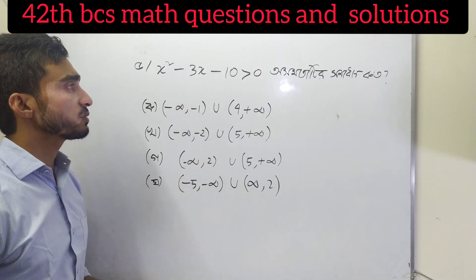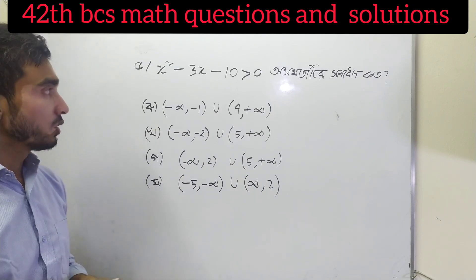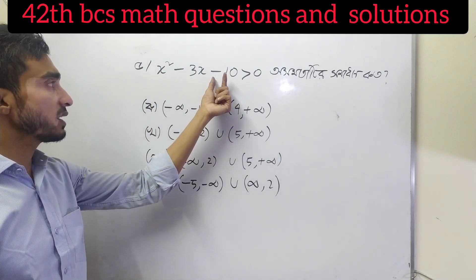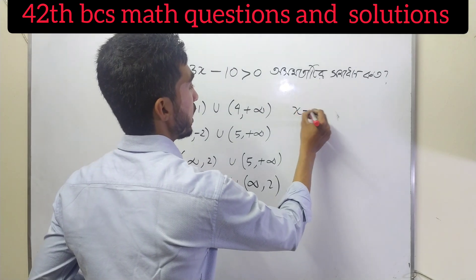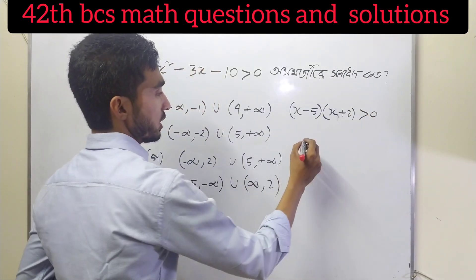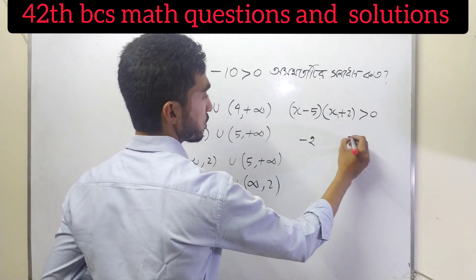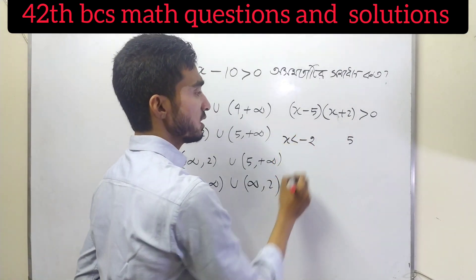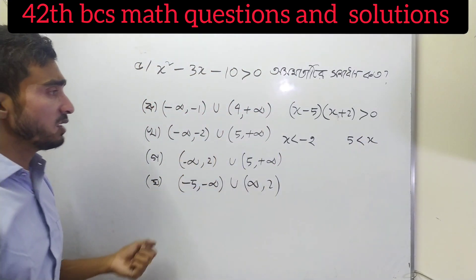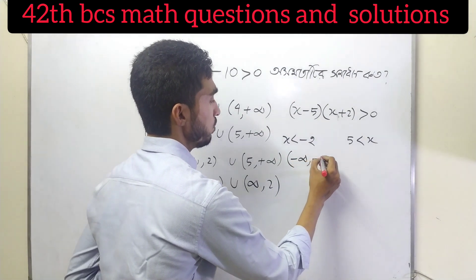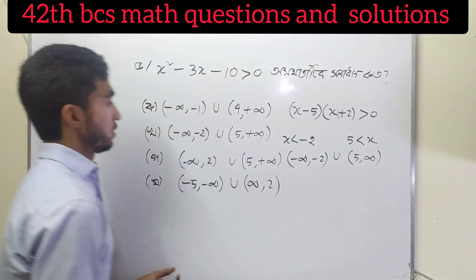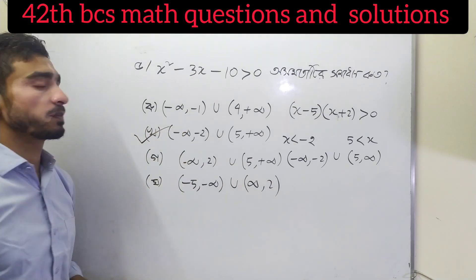So x squared minus 3x minus 10 is greater than 0, and between two factors both greater than 0, which means x is less than minus 2 and 5 is less than x. I am going to show you the limit: minus infinity to minus 2, union 5 to infinity.